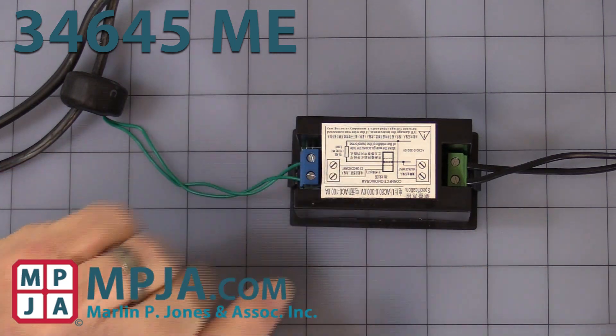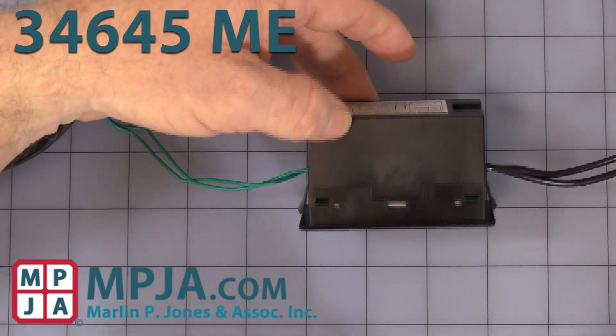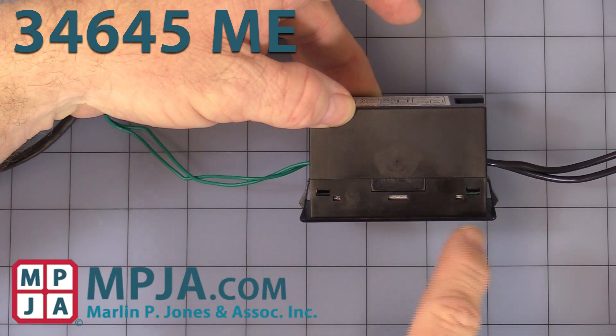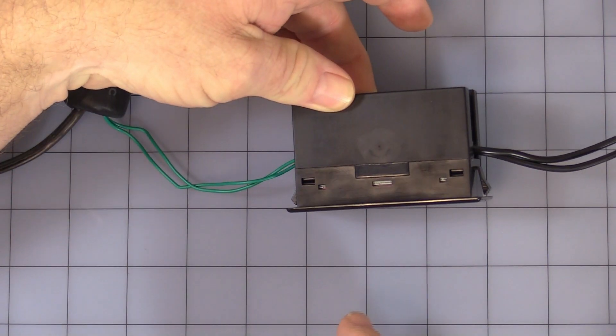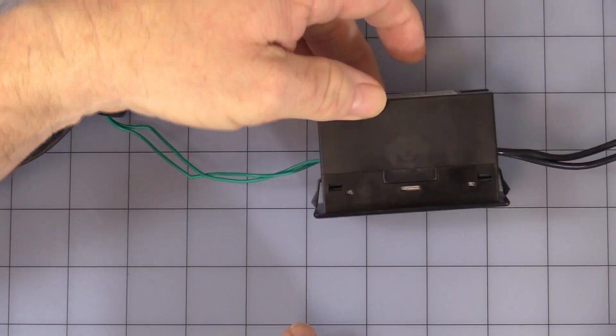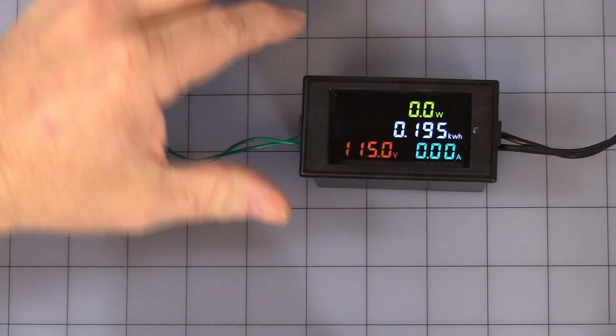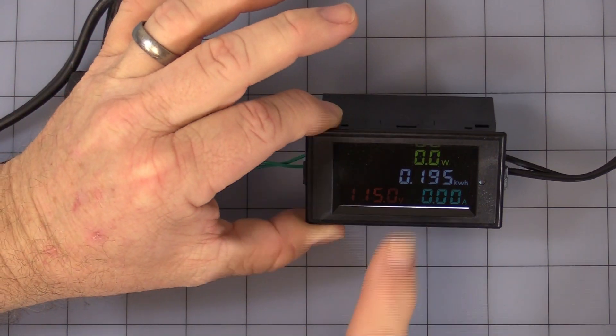Or you will do serious damage to the unit. It fits in a cutout of 76 millimeter by 39 millimeter with the little snap-in tabs. Let's look at the viewing angle. Straight on it's good.